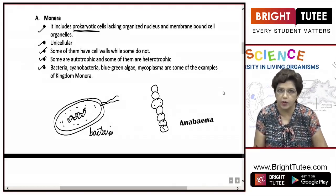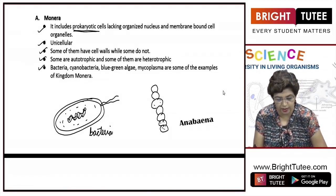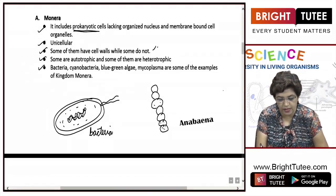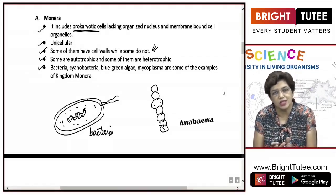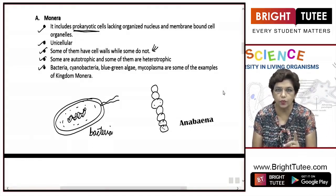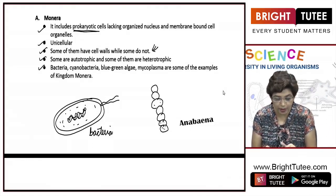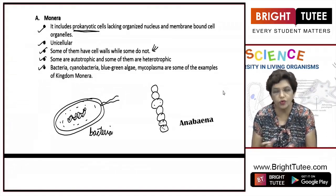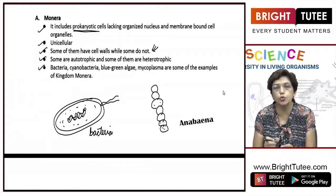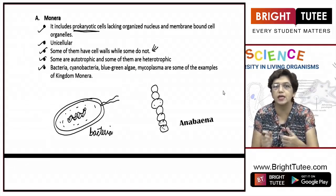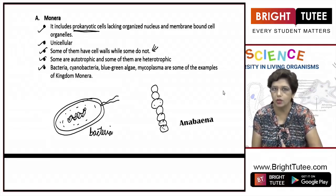You have to remember a few examples in each kingdom. If you see, whether they have cell wall or not, they are still categorized into one group, one kingdom which is Monera, because they are all prokaryotic. This is how scientists actually choose what the more important characteristic is.